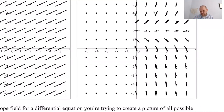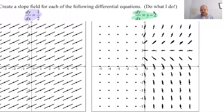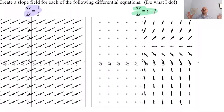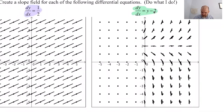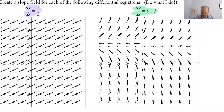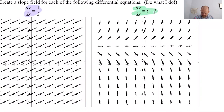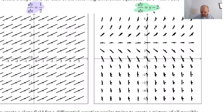I'm going to duplicate this side and move it over here so that at the very least my work is consistent. Is it right? It's good enough for me. So these are my slope fields.